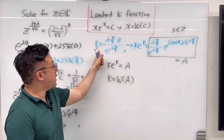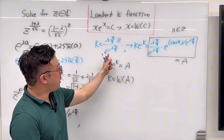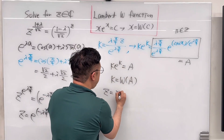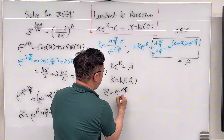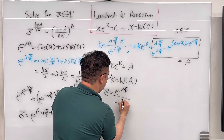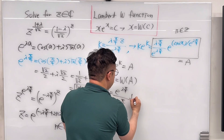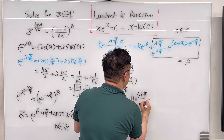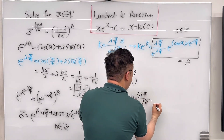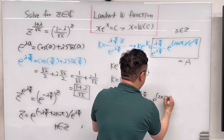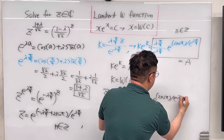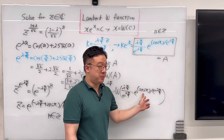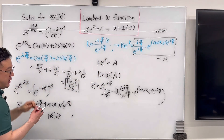Knowing that k equals i·pi/4 times z divided by e^(i·pi/4), we can solve for z: z equals e^(i·pi/4) divided by i·pi/4, times Lambert W of the entire expression i·pi/4 over e^(i·pi/4), times e^(2n·i·pi) over e^(i·pi/4). We know n is an integer, but the only integer value that makes this equation a true statement is 0.